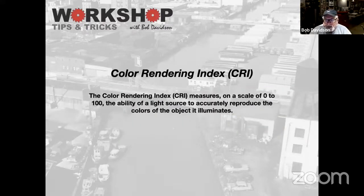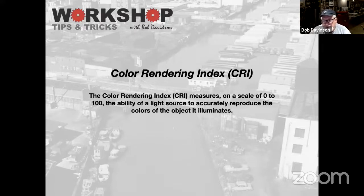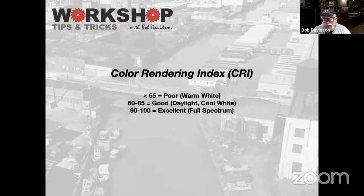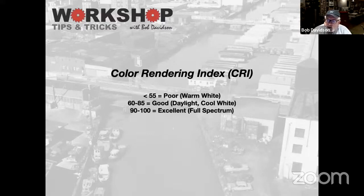Color rendering index measures on a scale from 0 to 100 the ability of a light source to accurately reproduce the colors of the object it illuminates. You perceive color by reflection — light hits an object and reflects its color back to your eyes. If it is a colored light hitting the object, it's going to affect how your eyes perceive that color. A CRI under 55 is going to be poor — that would be a warm white light bulb, candle, or lantern. Between 60 and 85 is good, which is daylight or cool white. Between 90 and 100 is excellent — that's what we call a full spectrum light source.